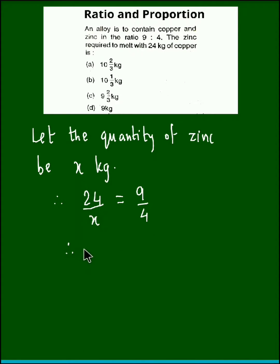Now, we simply cross multiply and obtain the value for x as 24 into 4 divided by 9.